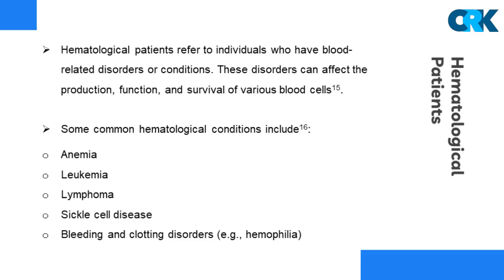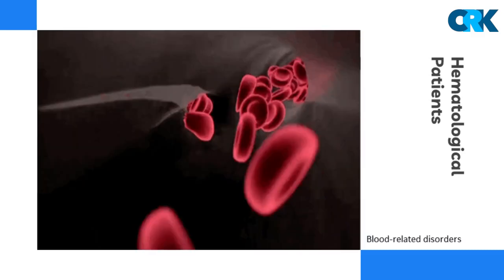Hematological patients refer to individuals who have blood-related disorders or conditions. These disorders can affect the production, function, and survival of blood cells, such as red blood cells, white blood cells, and platelets. Some common hematological conditions include anemia, leukemia, lymphoma, sickle cell disease, and bleeding and clotting disorders such as hemophilia. The following figure shows blood-related disorders.